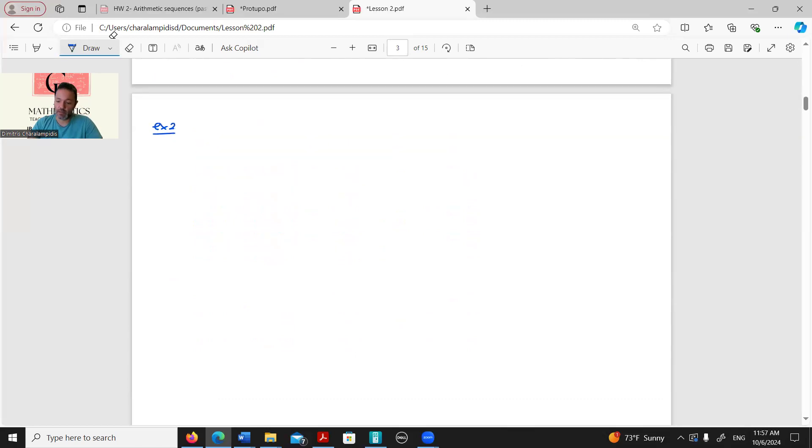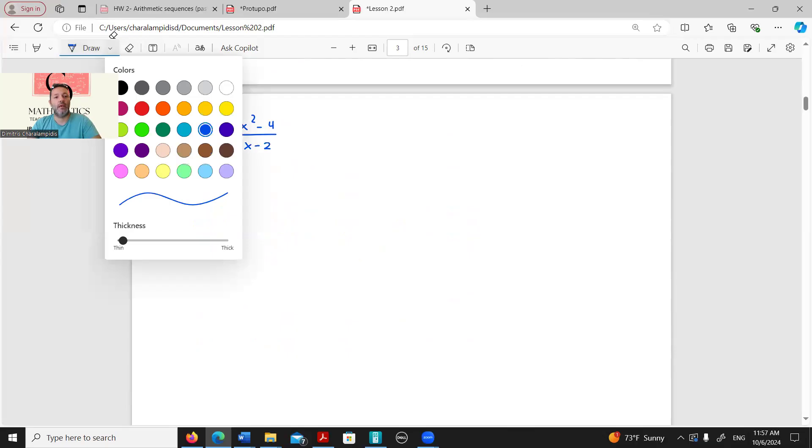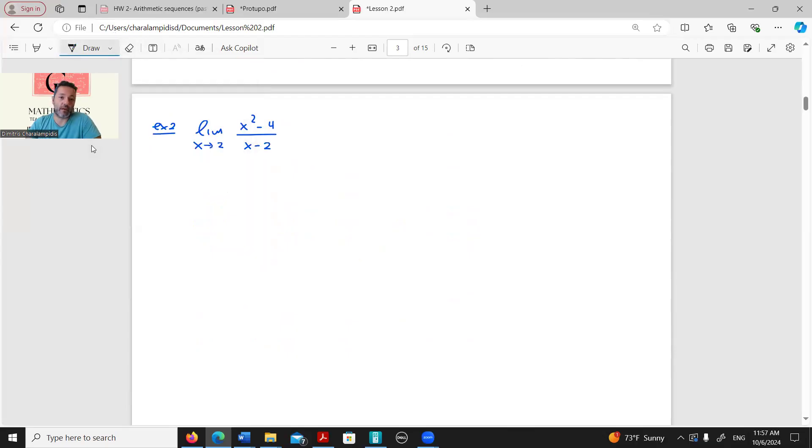Let's see a second example. Example number 2. Let's calculate this time the limit when x tends to 2 of x squared minus 4 over x minus 2. Once again, our first approach always would be to substitute. For x equals 2, we see that x squared minus 4 over x minus 2 turns into 0 over 0.